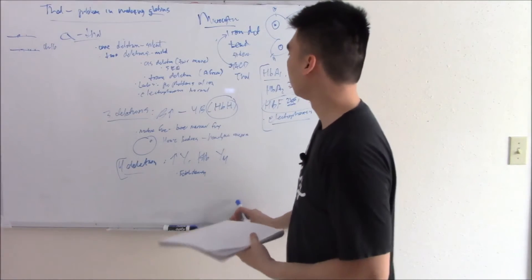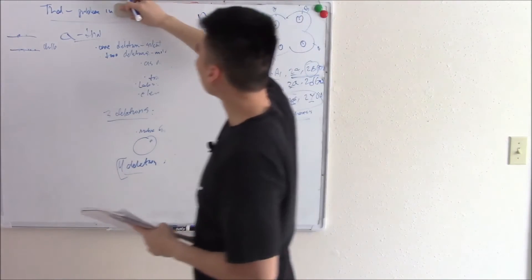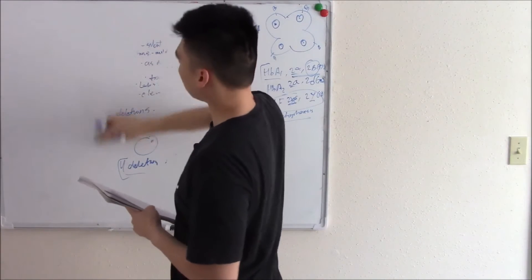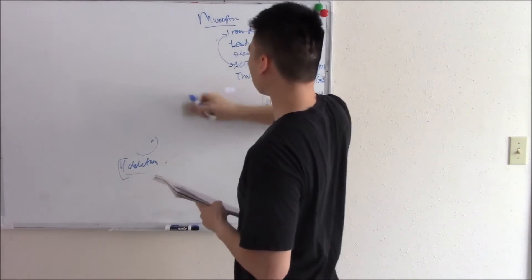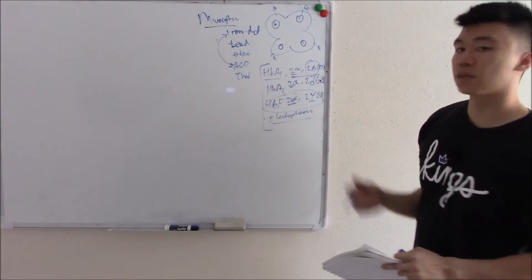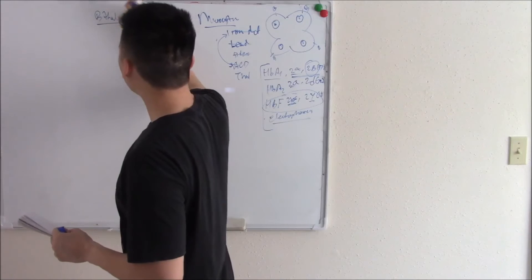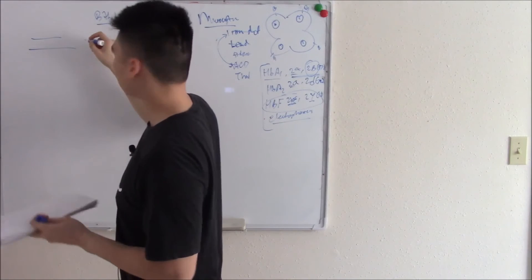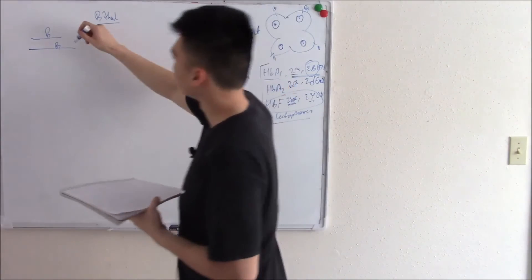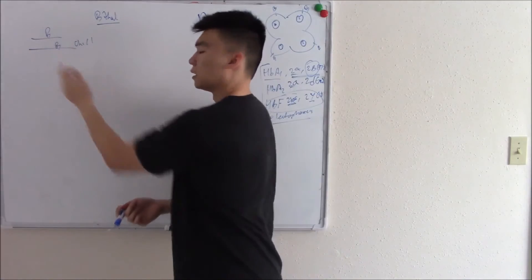Now let's talk about beta thal. Beta thal has to do with production of your beta chains. And beta thal is seen more in the Mediterranean population and the African population. There's a theory that it can protect against malaria. Beta thal is seen in HbA1. It's a little less important than alpha thal. So beta thal only has two alleles that govern it. And it's found on chromosome 11. The degree of beta thal depends on how many alleles are deleted.